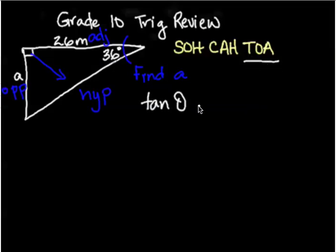So tan of some angle equals the opposite side over the adjacent side. Now I'm going to substitute the information from this triangle into the equation.